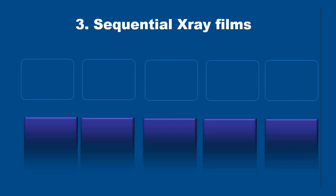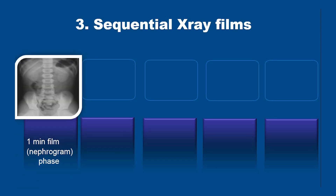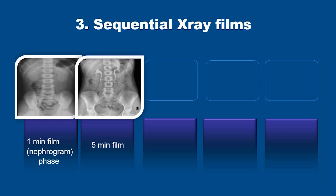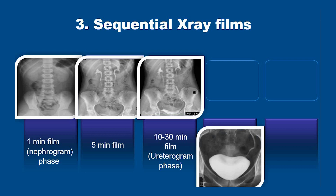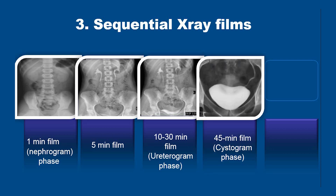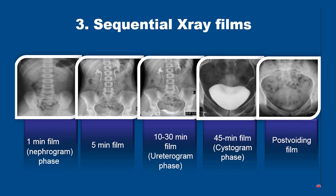The last step is taking sequential X-rays of the KUB region after the administration of contrast material. Multiple films are taken starting with a one-minute film, also known as the nephrogram phase, then a five-minute film, a 10-to-30-minute film known as the ureterogram phase, a full bladder film also known as the cystogram phase taken at around 45 minutes or when the patient complains of a full bladder, and lastly a post-voiding film. Additional films or modifications can be done depending on the indication and the patient.